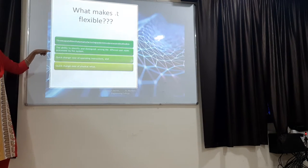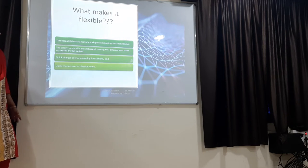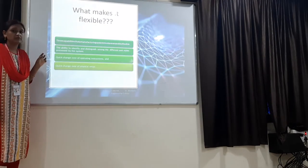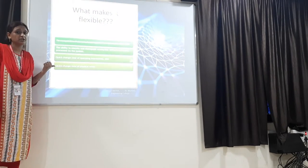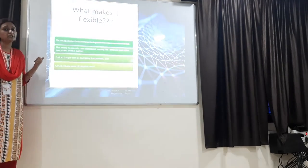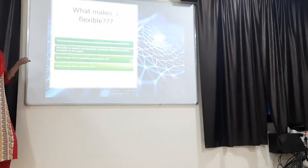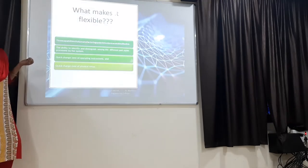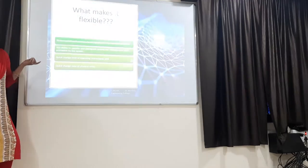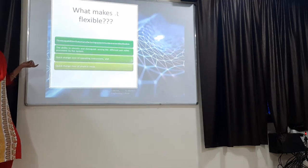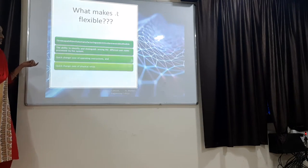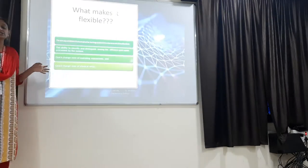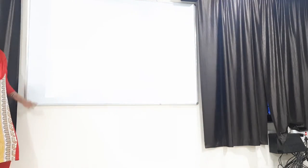Flexibility includes the ability to identify and distinguish among different part types processed by the system. When developing a component, we check which group technology and part family it belongs to. The component is assigned a number automatically based on its specifications. We can also change over operating instructions mid-production and change the physical setup of machines whenever required — that is why this system is called a flexible system.